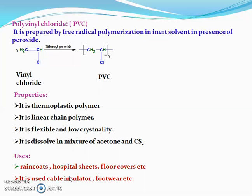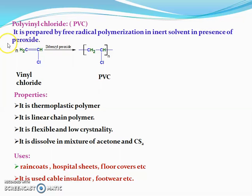The next polymer we are going to discuss is PVC, or polyvinyl chloride. PVC is prepared by free-radical polymerization in an inert solvent in the presence of peroxides. Peroxides are mainly used as a catalyst for making these polymers.